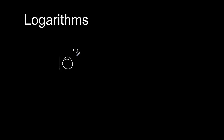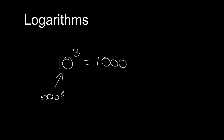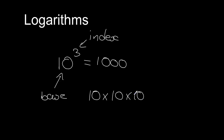If we take a number that we can write in exponent form, let's take an example: 10 cubed equals 1000. So 10 is the base and 3 is the index. All this means is that 10 multiplied by 10 multiplied by 10 — multiplying it 3 times, which is the index — equals 1000.